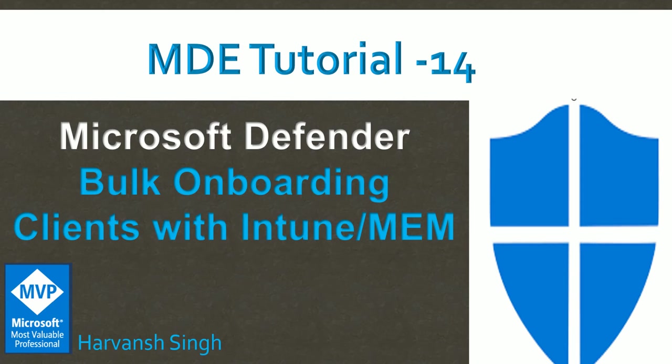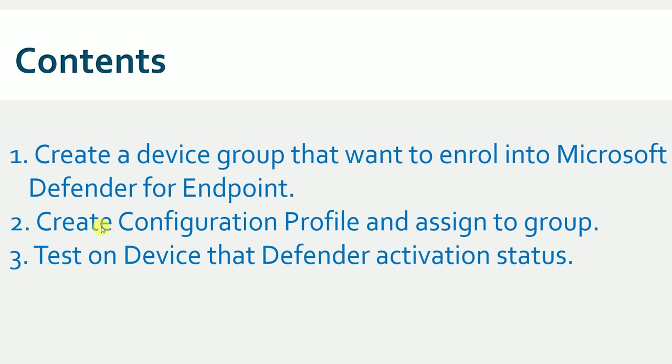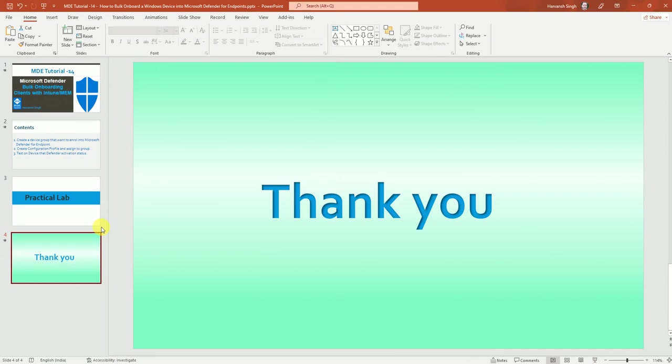So let's start this video. The content for this video: first, we need a device group — either static or dynamic as you want. Initially for testing you can create a static group, add a few devices for testing. Once that's done, you can put it as a dynamic query as well. Then we'll be creating a configuration profile that will help us onboard a device into Defender, and finally we'll test whether Defender is activated or not.